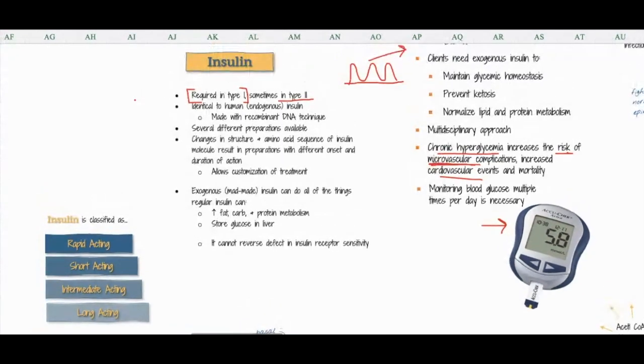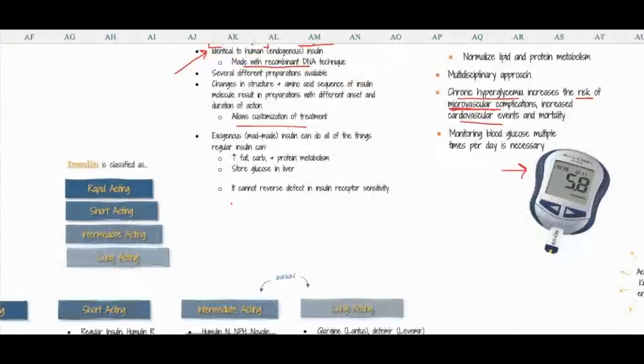This insulin that we make that we give them—I like how I say 'we' like I actually make it—it's identical to human endogenous insulin. There are several different preparations available, and depending on the structure and amino acid sequence of the actual insulin molecule, you can have a different onset and duration of action. This is how we customize treatment for different people.